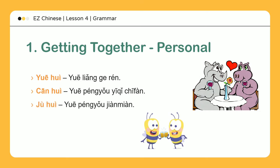聚会: 约朋友见面 — To make a date to meet. To arrange a time and place to get together.